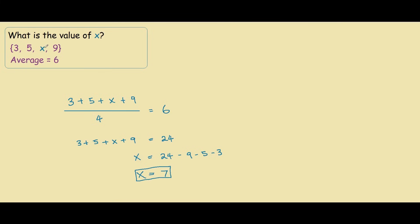So our missing value was 7, and you can double check this by finding the average of 3, 5, 7 and 9.